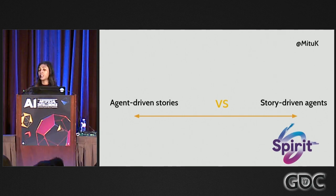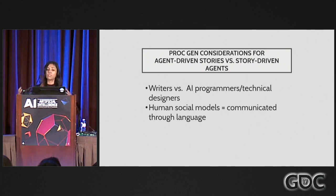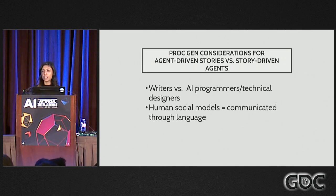For example, in Redshirt, the space created was about using people as pawns, so a lot of character attributes were in that sort of negative space — things like vanity, fickleness, bigotry. Those were the attributes that set up characters in opposition to each other. On the story-driven agent side, at Spirit AI we're building tools and middleware to help people write story-driven agents.